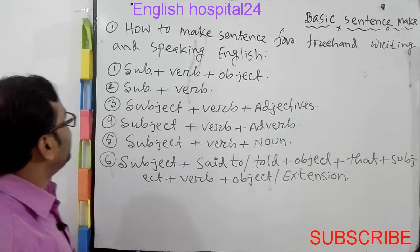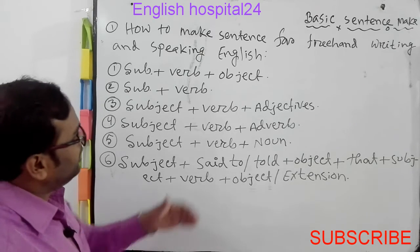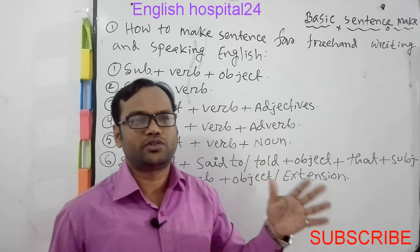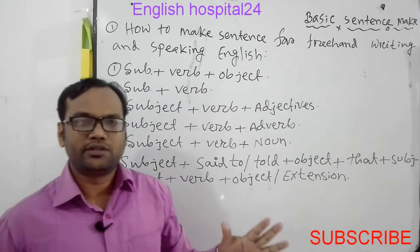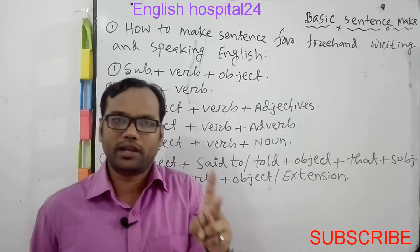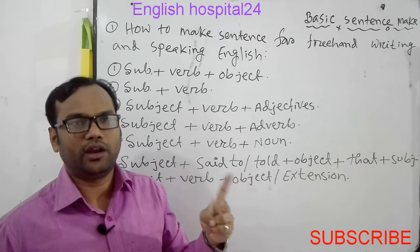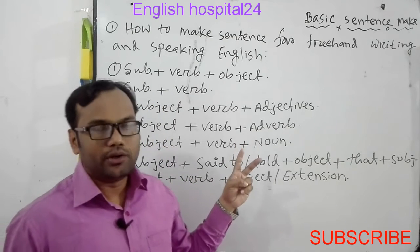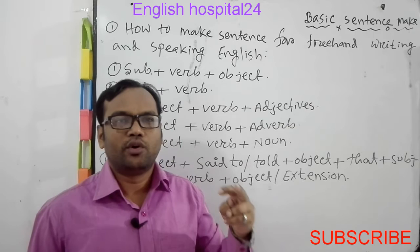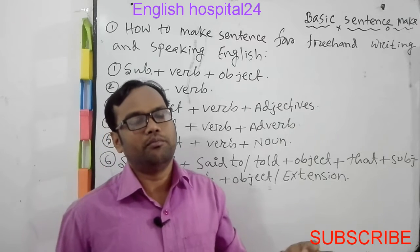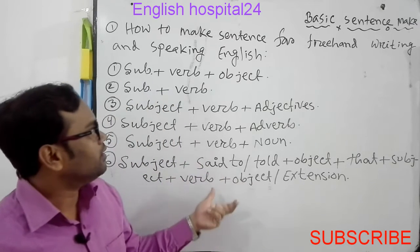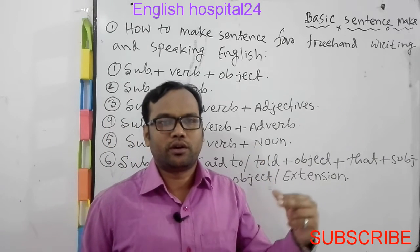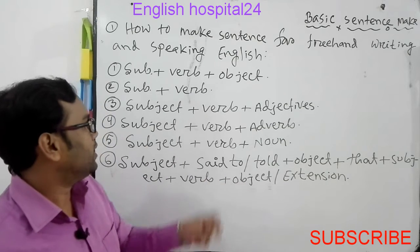In our speaking and writing, we use different types of sentences. Our sentences are of two types: one is according to meaning and another is according to structure. Today I will show you how to make sentences on the basis of meaning. In this lesson you will get some easy techniques and shortcut methods to make or build up English sentences.